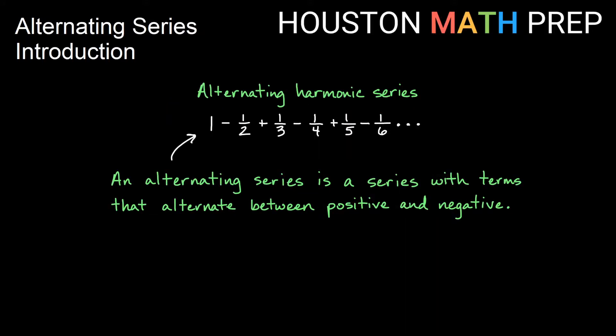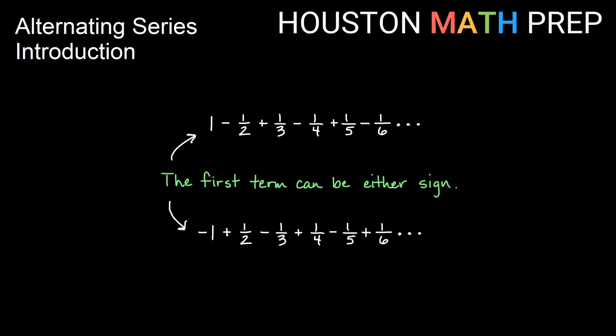So first, an alternating series is a series with terms that alternate between positive and negative. You could have the first term being positive and then alternating. You can have the first term being negative and then alternating. But the idea is that basically the sign of a term and the term after it are going to be opposite. Both of these are considered alternating series.